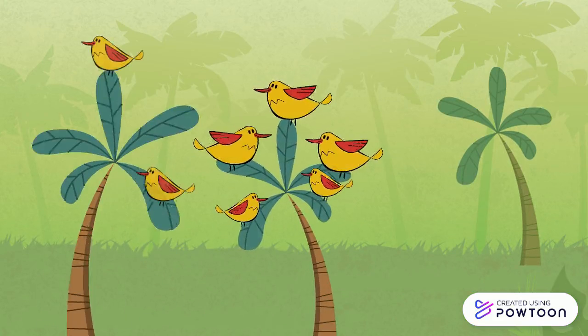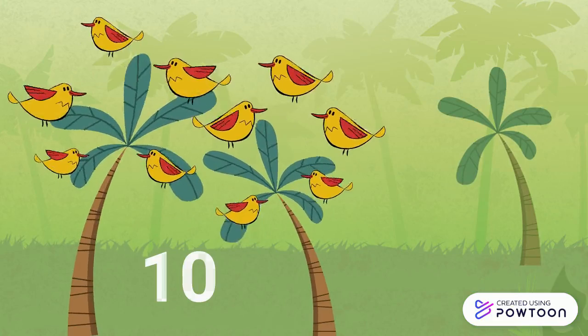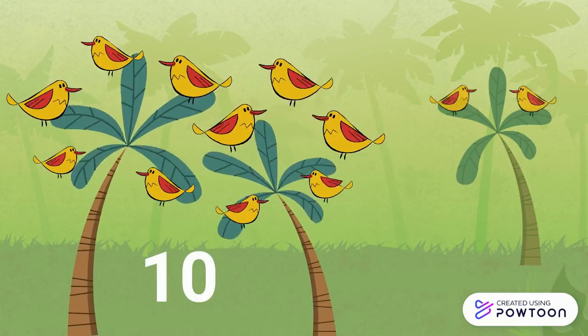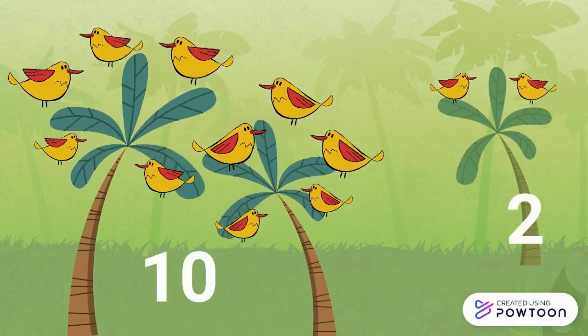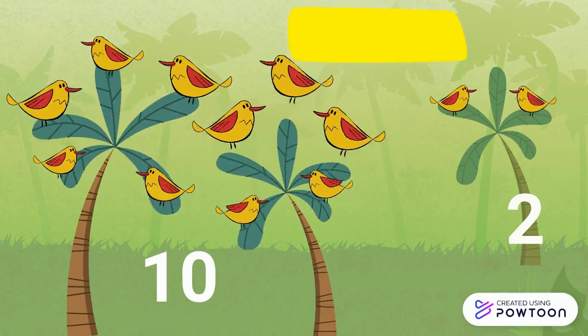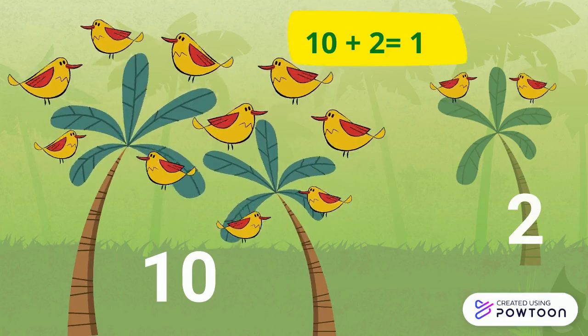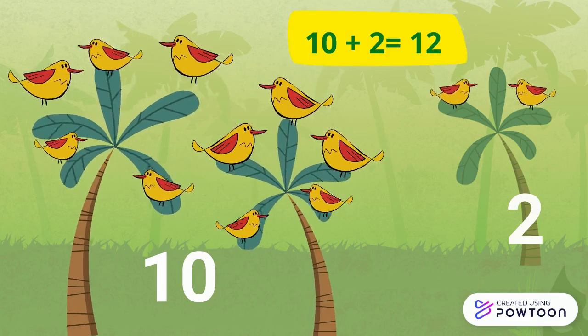There are 10 birds on the trees and 2 birds on the other trees. The equation is 10 plus 2 equals 12.